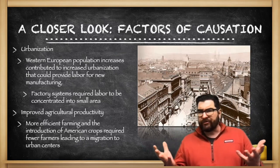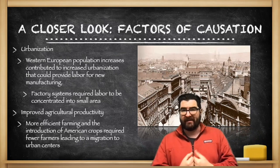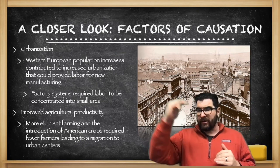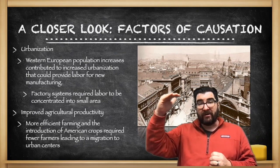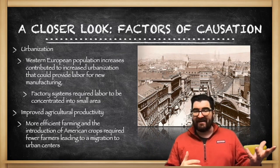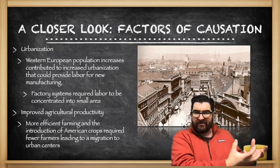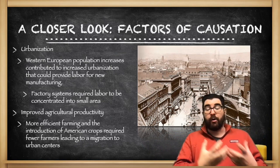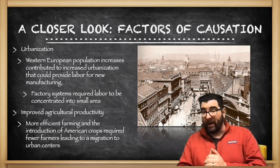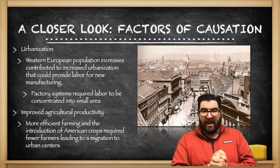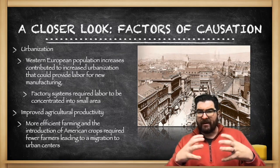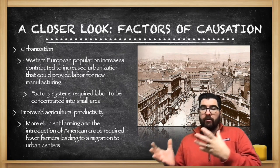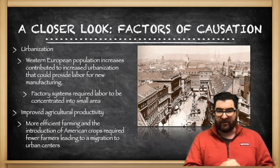To have an Industrial Revolution, you also need urbanization — you need a lot of people. Western Europe has experienced a population boom since the 1600s, as new foods via the Columbian Exchange are going to make their way into Western Europe. Populations are rising, and many of those new people will be moving to urban centers.